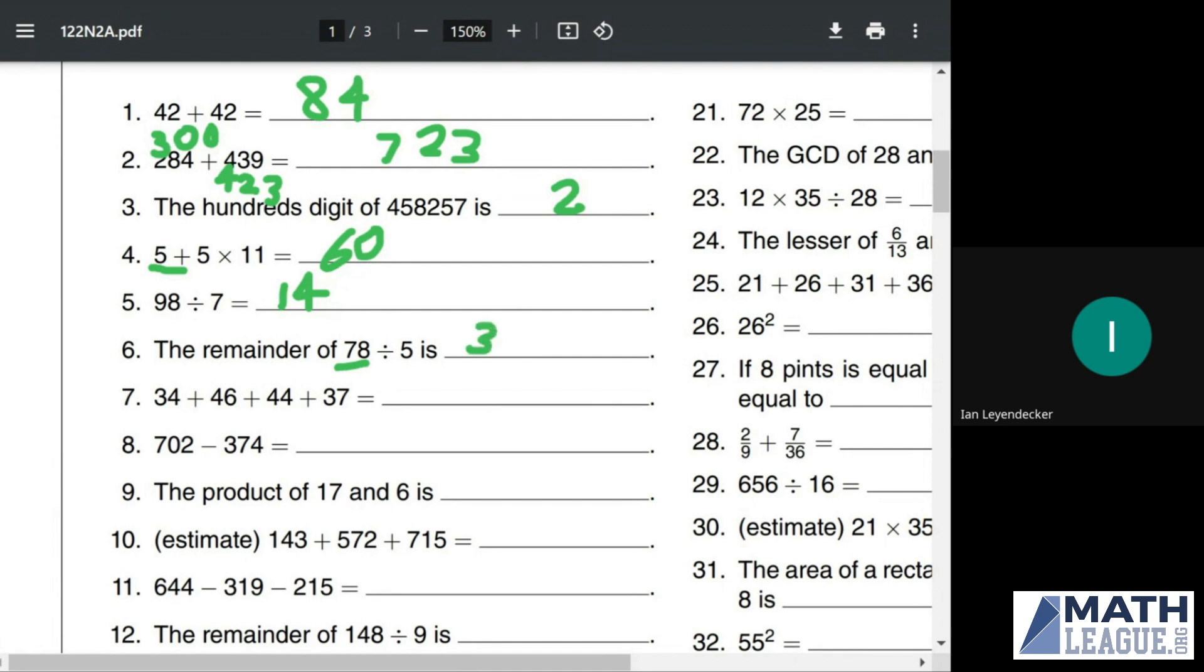For 34 plus 46 plus 44 plus 37, 34 plus 46, 4 and 6 make 10, so this is going to add up to a multiple of 10. Specifically, it's going to add up to 80. And 44 plus 37, the 4 and the 7 add up to 11, so it's going to end in 1. If we were to look at this as 36 instead of 37, then 44 and 36 would add up to 80. So 44 and 37 are going to add up to 81 for a sum of 161 total.